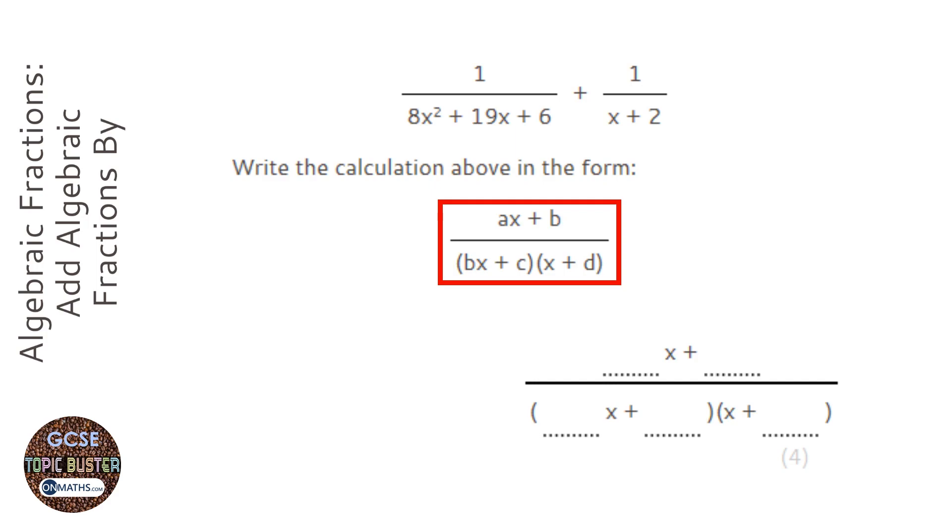It's basically telling you that when you add them together the common denominator will just be a quadratic. Now it might be tempting just to multiply all of this by all of this and kind of get a cubic equation, but actually the answer is saying no don't do that, the bottom will work if you factorize it.